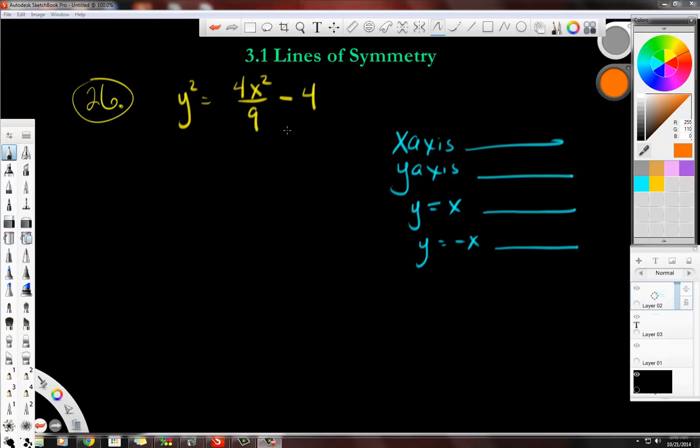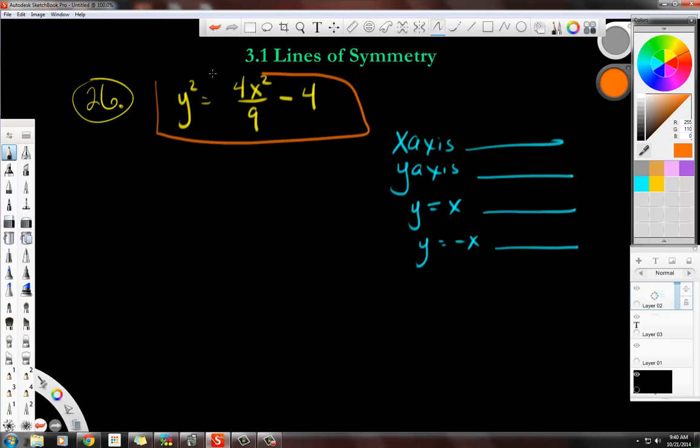So I have this thing here, which is a complicated-looking problem, and let me show you how to do it. First thing, we are going to be putting this in the calculator, but your calculator is dependent on you solving this for y. So what we're going to do, since it says y squared, is go ahead and square root both sides, and then what happens when you square root y squared is you get y, and this is what your calculator needs.